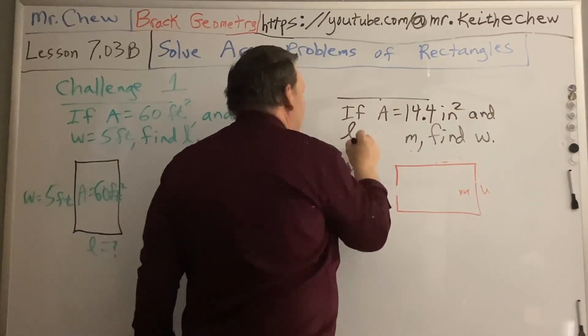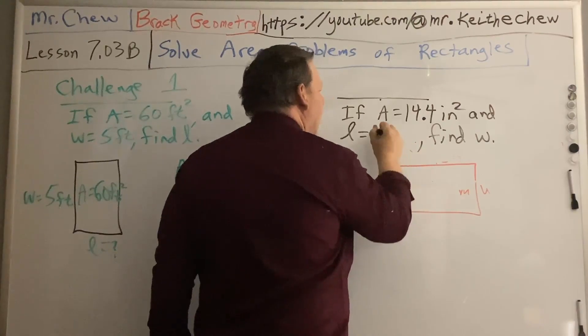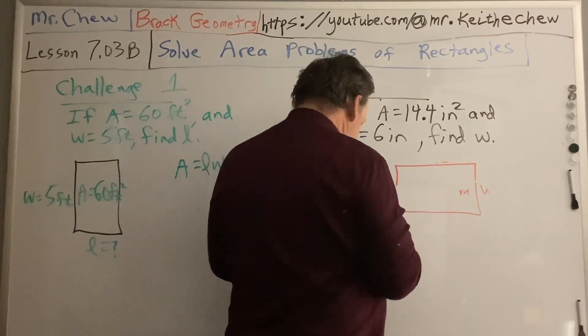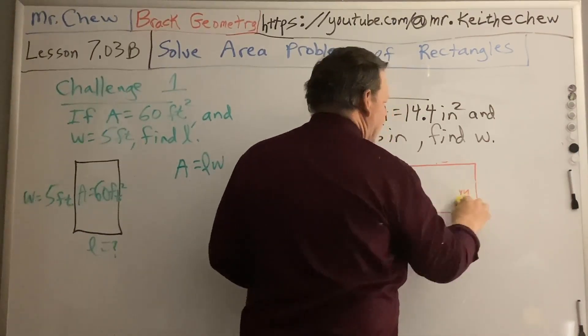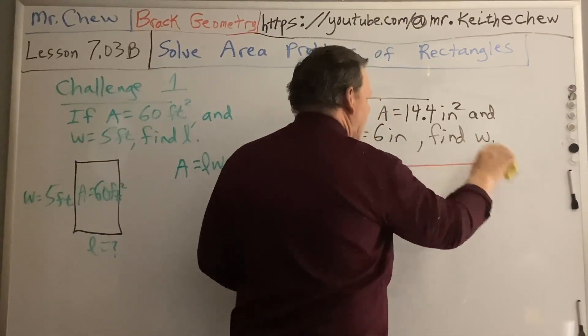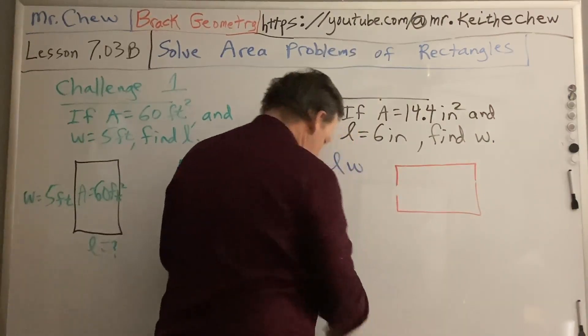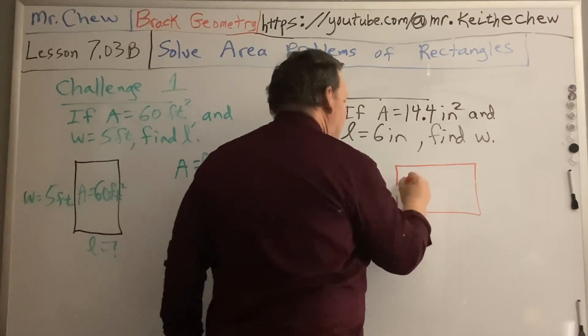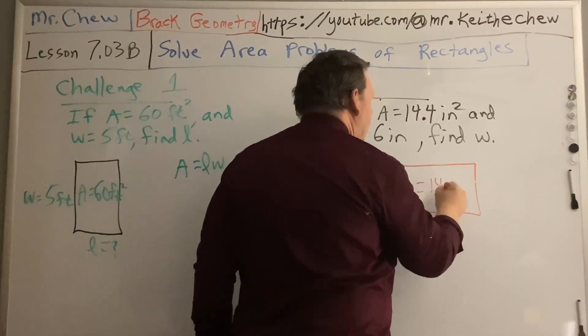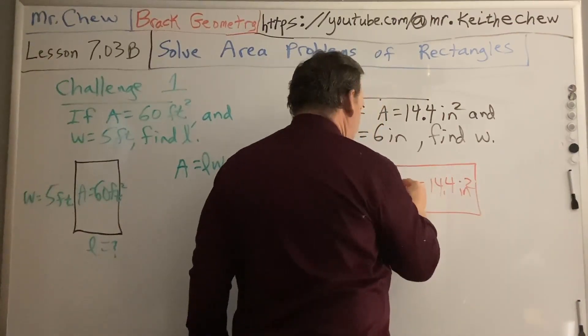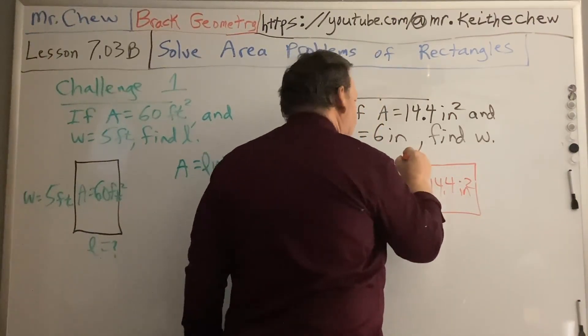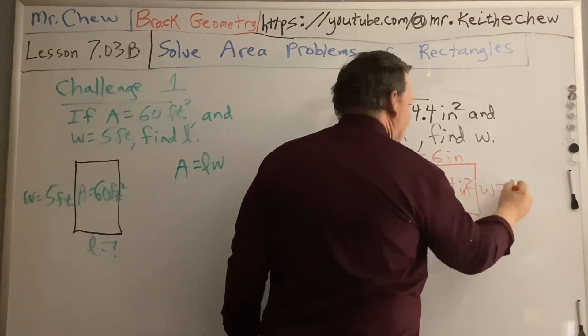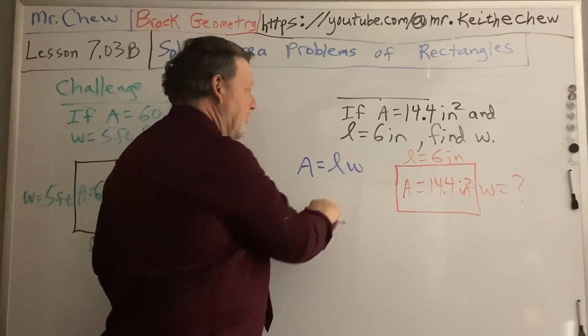So challenge two says that my area is 14.4 inches squared. And my length is 6 inches. And it wants us to find W. So I'll get this all cleaned up here, and it'll be perfect problems for you to work on. So my area is 14.4 inches squared. My length is 6 inches. And my width, I don't know.